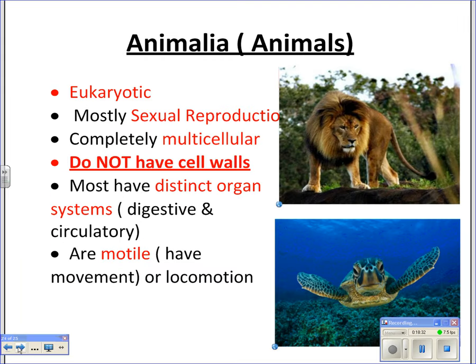The animal kingdom — our kingdom — reproduces mostly through sexual reproduction, is completely multicellular, and does not have cell walls; we only have a cell membrane. We have distinct organ systems and most of us are motile, meaning we have movement or locomotion.